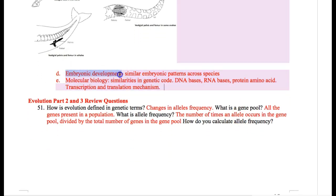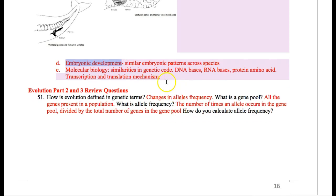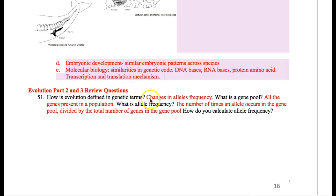The next evidence is embryonic development. During embryogenesis — when a fertilized egg is turning into a full organism — early on, for all animals, their embryonic patterns look similar. If you Google embryonic development, you'll see that a snake embryo even kind of looks like a human embryo, but obviously we're not the same. They're similar because we shared a common ancestor.